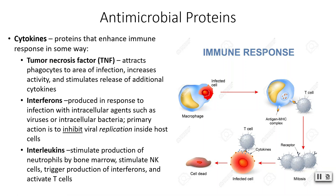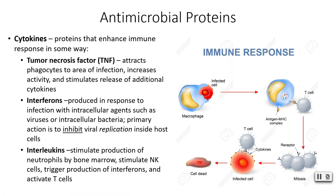Interferons are produced in response to intracellular agents — pathogens that have infected our cells, like viruses and some bacteria. Their main job is to inhibit or interfere with replication inside the host cell. If the virus or bacteria is unable to replicate, eventually it will die and cannot infect any more host cells. Interleukins stimulate the production of neutrophils by your bone marrow, stimulate natural killer cells, trigger the production of interferons, and help activate T cells — they do quite a few different things.